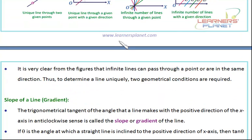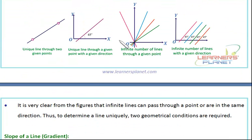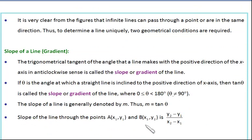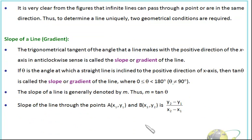It's very clear that infinite lines can pass through a point or are in the same direction. So if we wish to determine a line uniquely, two geometrical conditions are required. Let's discuss these two geometrical conditions — that is, the slope of a line.